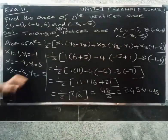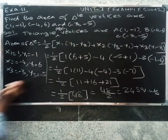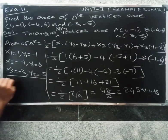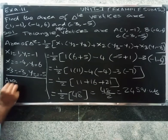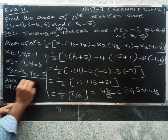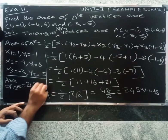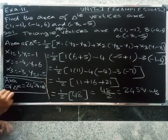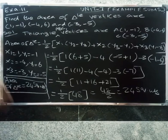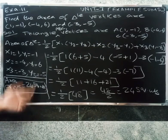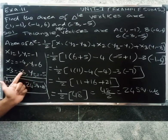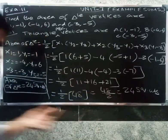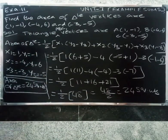Therefore, area of triangle equals 24 square units. Just substitute x1 y1, x2 y2, x3 y3 values into the formula to get the final answer of 24 square units.